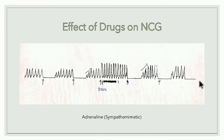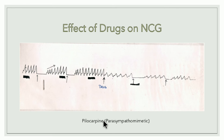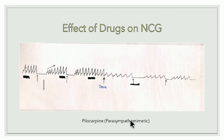Pilocarpine is parasympathomimetic — it mimics parasympathetic stimulation. Effect on frog's heart: decrease in force of contraction and decrease in heart rate. When pilocarpine is applied, height of the curve decreases and width increases. Vagus stimulation and crescent stimulation effects are still present. So when height decreases, width increases, and vagal/crescent effects remain, the drug is pilocarpine (parasympathomimetic).